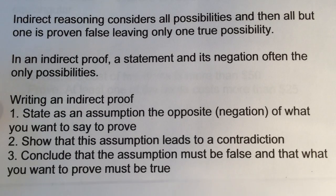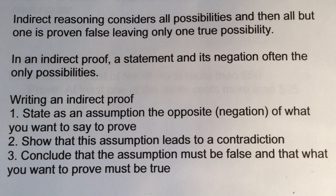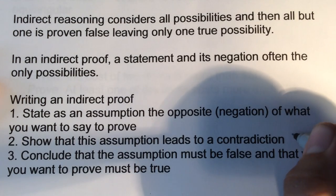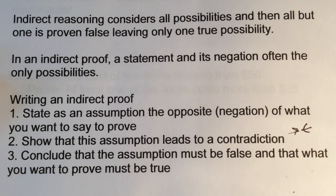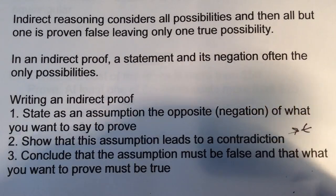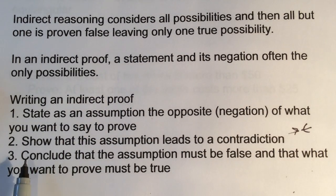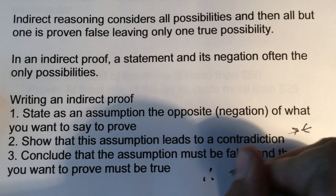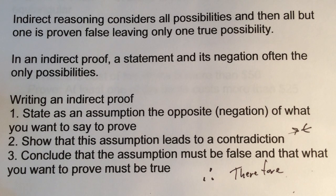When writing an indirect proof: first, state the assumption — the opposite, or negation, of what you want to prove. You assume the opposite of what you're trying to prove, then use the given information to show that assumption leads to a contradiction. A contradiction is represented by two arrows pointing back and forth. Then you conclude — shown by three dots meaning 'therefore' — that the assumption must be false and therefore what you wanted to prove is true.